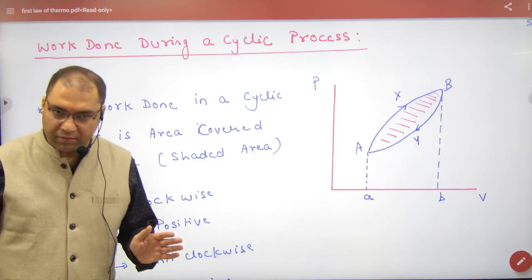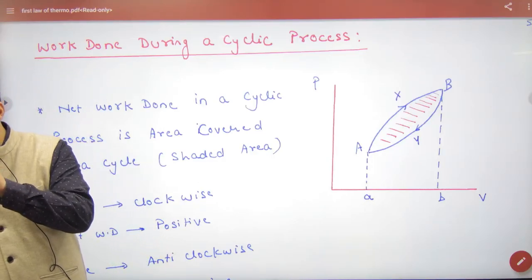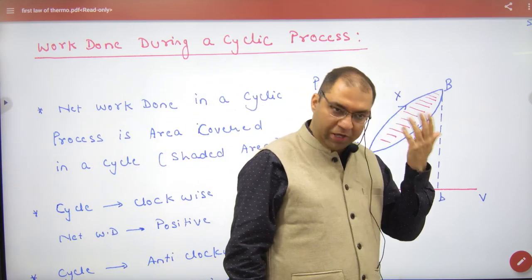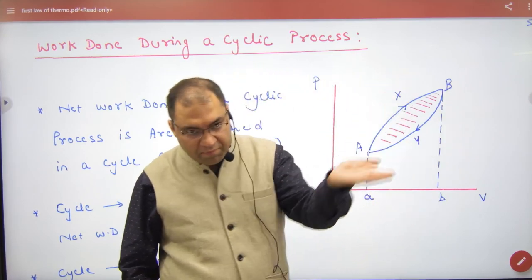Work done during a cyclic process. Consider a cyclic process - what happens in a PV diagram? A to B is expansion and B to A is compression.